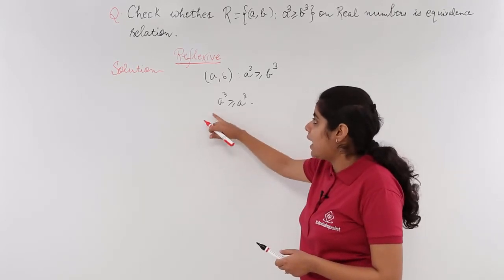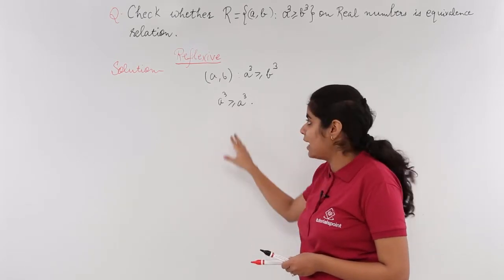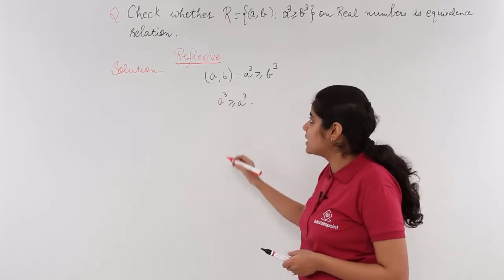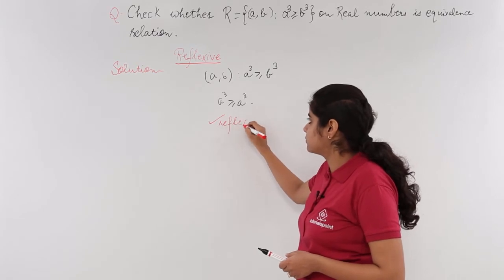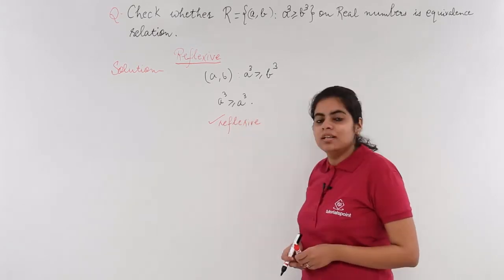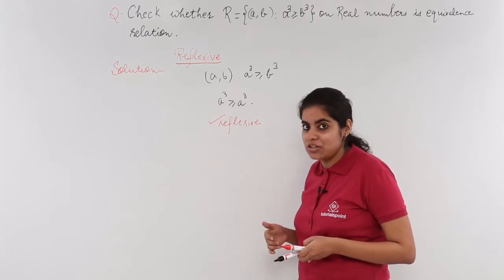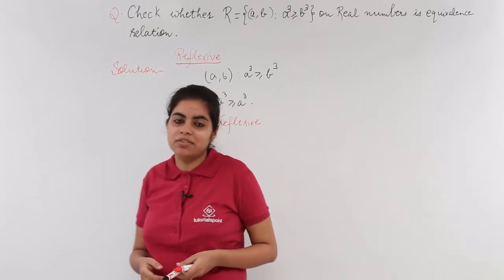Because every number is greater than or equal to its cube. I have this equality sign which helps establish validity. So yes, I find that this is reflexive. We have already seen that this is reflexive.